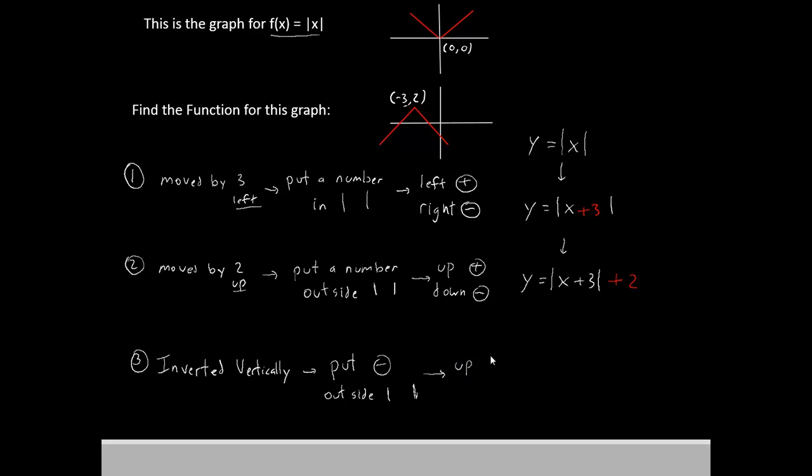So if you want the absolute value function to point upward, you keep it positive or just don't put a sign on there. But if you want to make it point down, you put a negative sign on there.